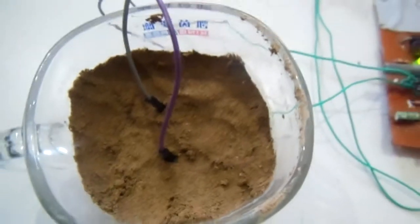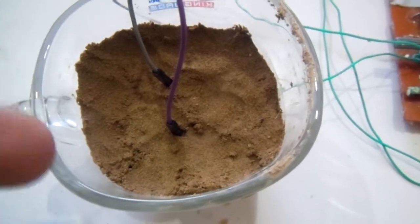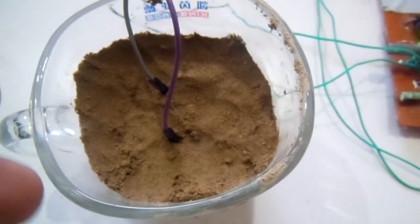Whenever the soil becomes dry, the circuit will automatically turn on the relay and the relay will turn on the solenoid coil. When the solenoid coil is energized, the solenoid valve will pull up and the water will flow from the water tank to the plants.